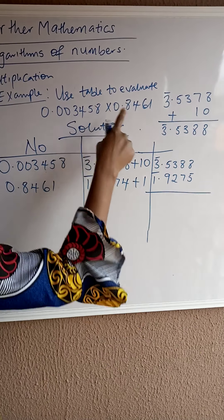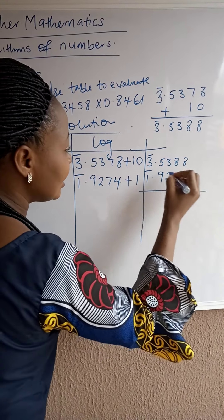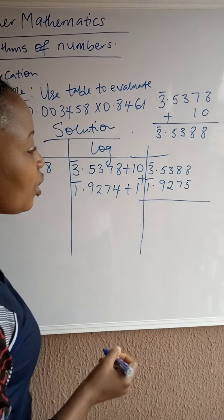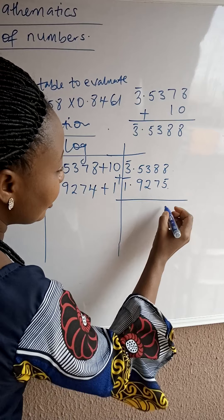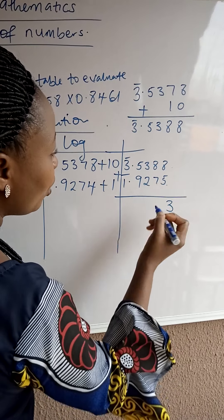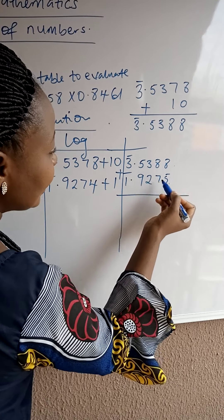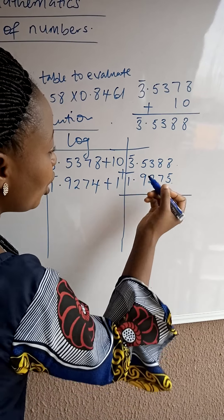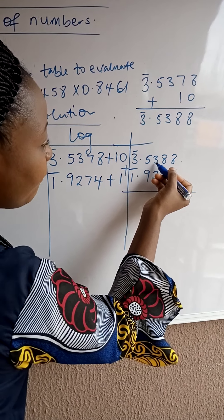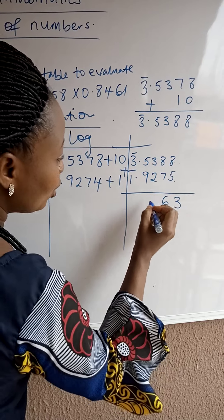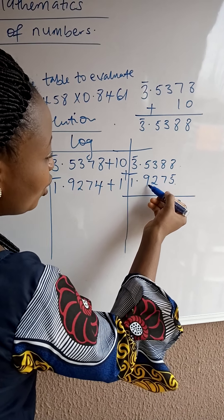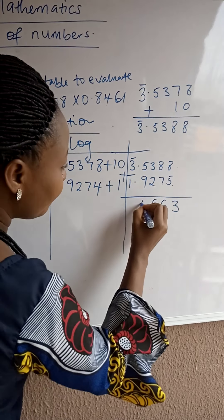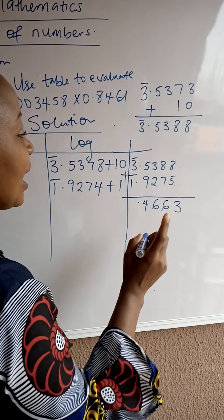Now, the equation is multiplication. That means we are going to add the logarithm. That's plus 8 plus 5. We give us 13. We carry 1. 1 plus 8. That's 9. 9 plus 7. 16. We carry 1. 1 plus 3. 4 plus 2. That will give us 6. Then, 5 plus 9 is 14. 4. Carry 1.